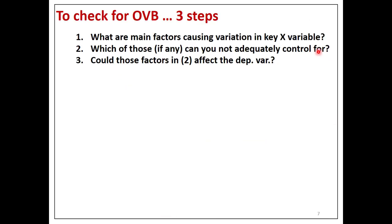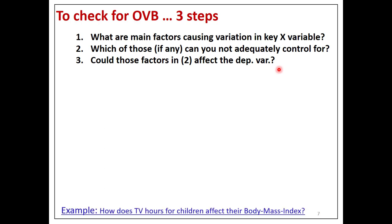To check for omitted variables bias, there are three main steps. First, think: what are the main factors causing variation in the key X variable? Second, which of those factors, if any, can you not adequately control for? And third, could those factors that you can't control for affect the dependent variable? Those are your three steps.